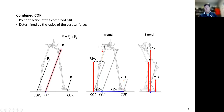The combined center pressure will divide the distance from the trail foot center pressure to the lead foot center pressure into a 25 and 75 percent ratio. The combined center pressure position is basically determined by how much vertical force is acting on the feet.